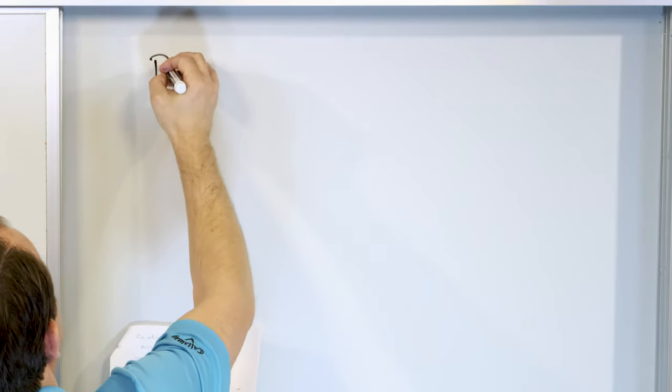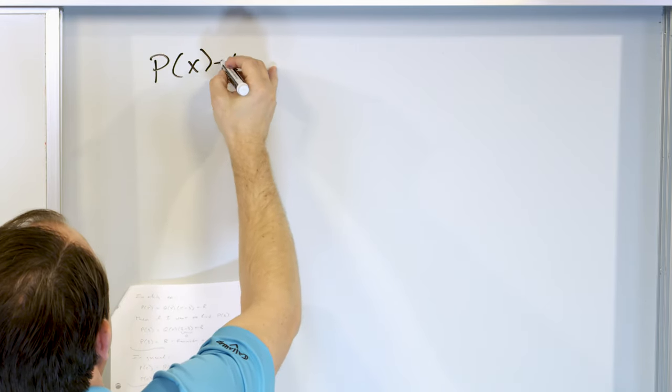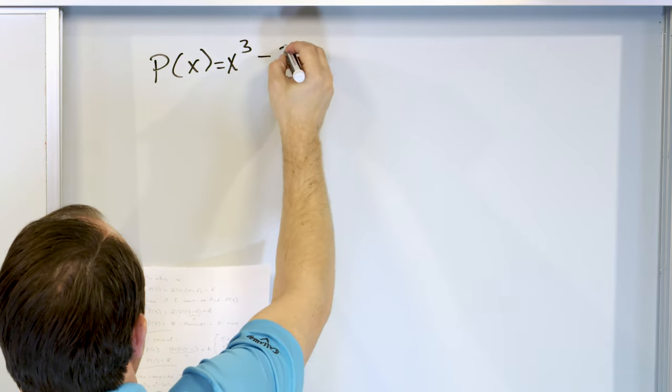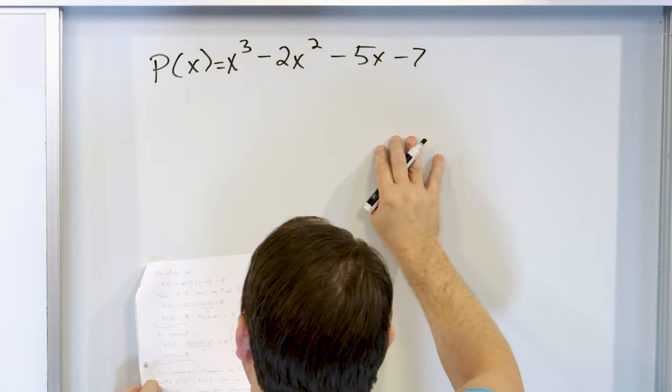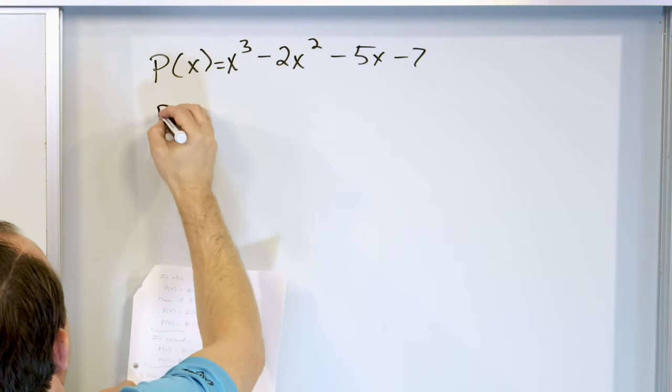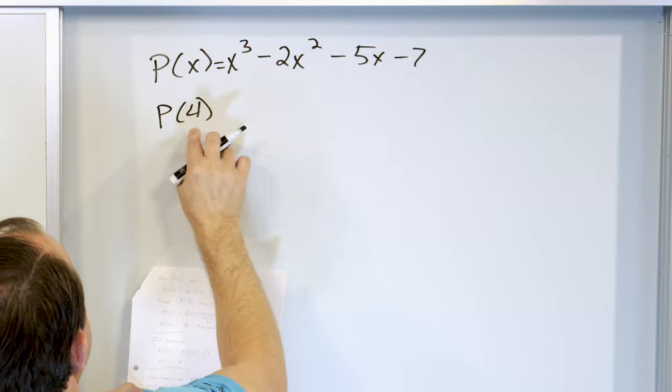If we divide by x minus the number we're trying to evaluate at, the term drops away and the remainder is the answer. It's kind of a back-door way of figuring out what that polynomial equals at a given value. So let me just give one more example: we're going to use the remainder theorem to evaluate p of x equals x cubed minus 2x squared minus 5x minus 7, and we want to find p of 4.